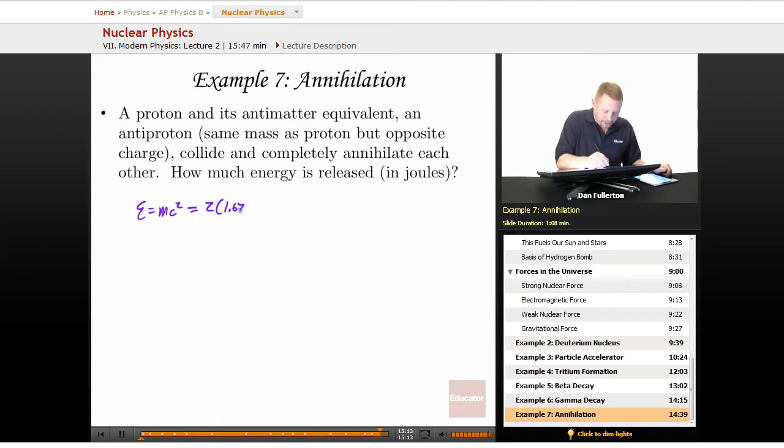That's 1.67 times 10 to the minus 27 kilograms and the speed of light, 3 times 10 to the eighth meters per second, squared. 2 times 1.67 times 10 to the minus 27 times 3 times 10 to the eighth times 3 times 10 to the eighth gives me 3 times 10 to the minus 10 joules.